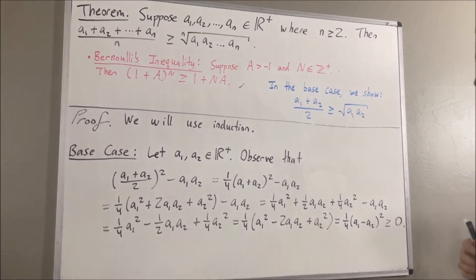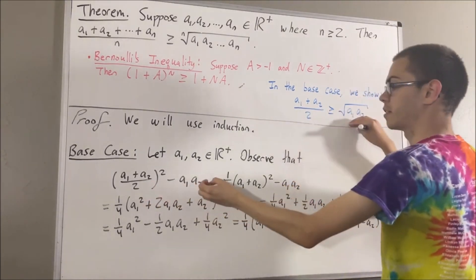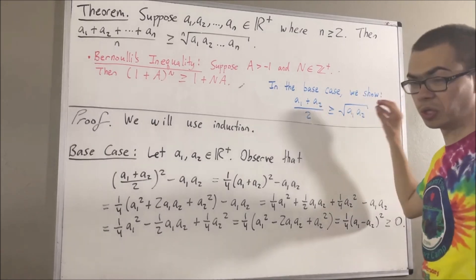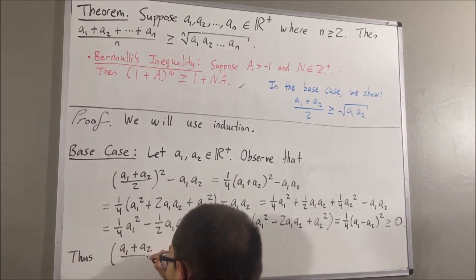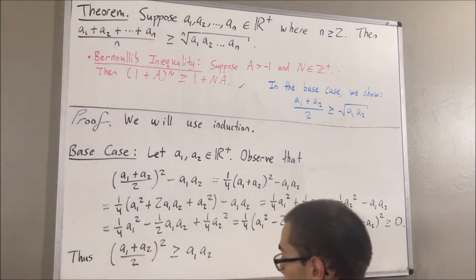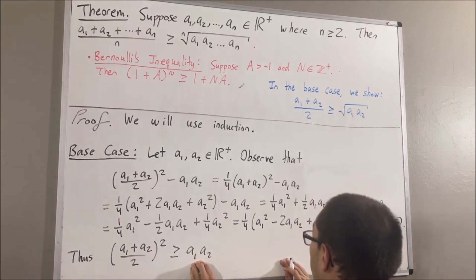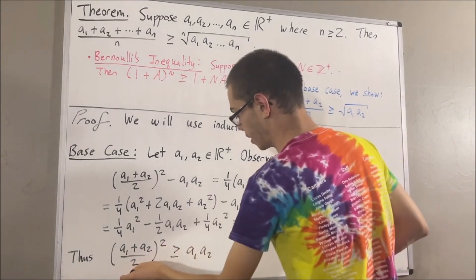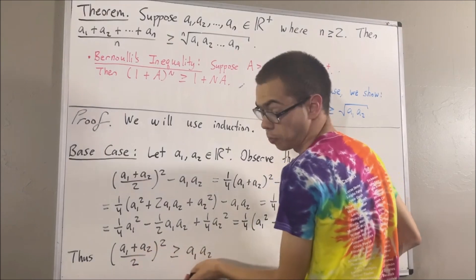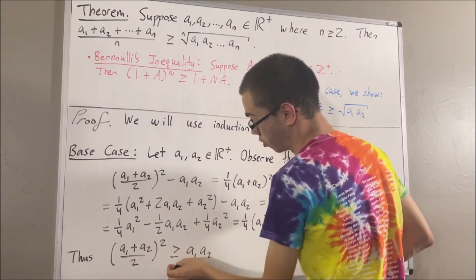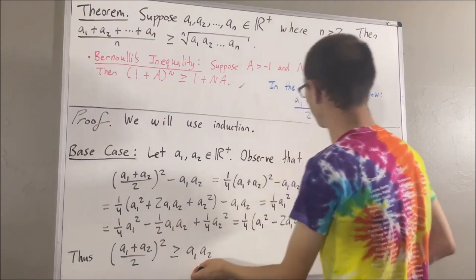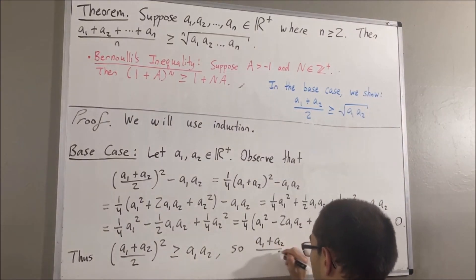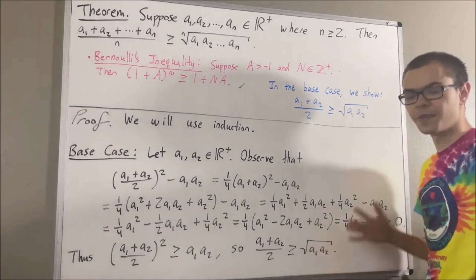So, we have shown that the square of this minus the square of this is greater than or equal to 0. And that tells us that the square of the left side is greater than or equal to the square of the right side. Since these values are both positive, it follows that the square root of the left side must be greater than or equal to the square root of the right side. Therefore, a1 plus a2 over 2 is in fact greater than or equal to the square root of a1 times a2. So, this completes the base case.